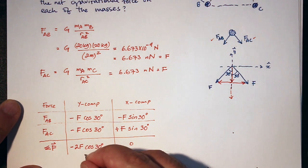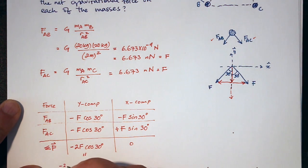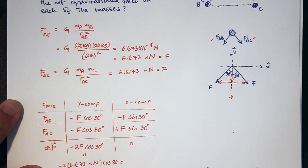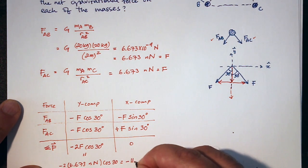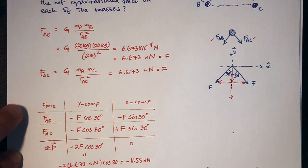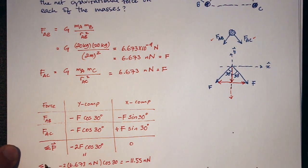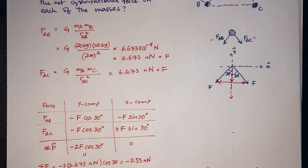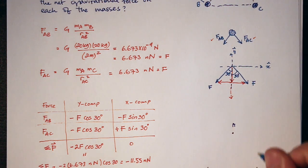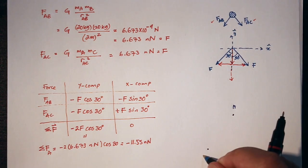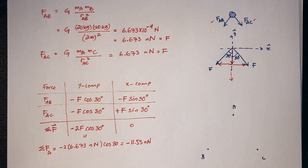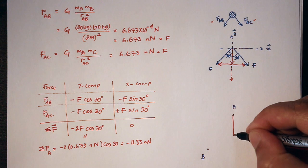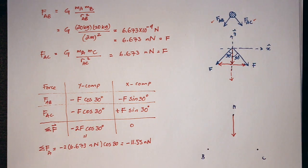The resultant force is going to be 2F cosine 30, which equals minus 2 times 6.673 nanonewtons times cosine 30, coming out to minus 11.55 nanonewtons. So that's the resultant force on A — it points in the minus Y direction with magnitude 11.55 nanonewtons.